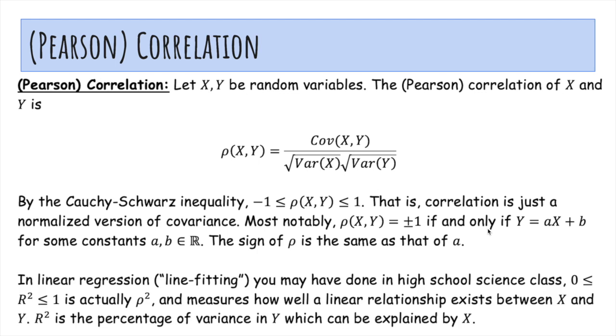In linear regression or line fitting, you may have done in high school science class, you'll have computed R squared, which is always between zero and one. And that R squared is actually just rho squared. And it measures how well a linear relationship exists between X and Y. And our interpretation is that R squared is the percentage of variance in Y which can be explained by variation in X.